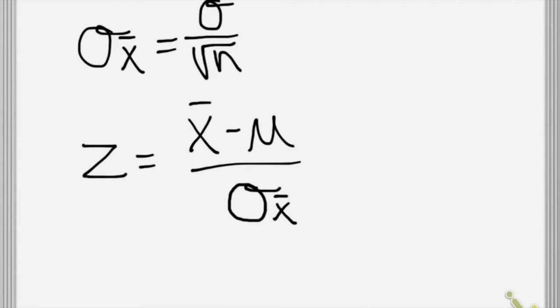So to begin, you're going to need to calculate a standard error of the mean, and if we have population data, that's the formula for doing it. It's the population standard deviation divided by the sample size, and then once you've calculated a standard error, if you know the sample mean and the population mean, you can calculate a z-score using this formula here.